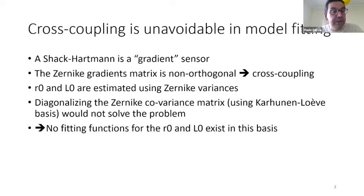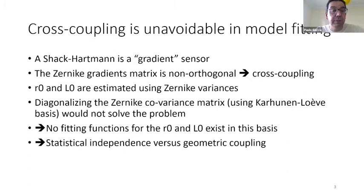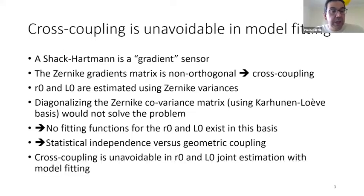In particular, in the Karhunen-Loève basis, you don't have a fitting function for R0 and L0 estimation. And you should bear in mind that statistical independence, which is the idea behind the basis, is not the same as geometric coupling. So it's not at all obvious that theoretically it will even work. And so the conclusion is that this effect is unavoidable and you have to correct for it.